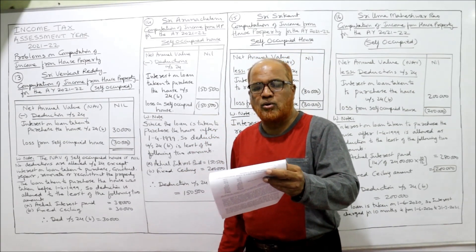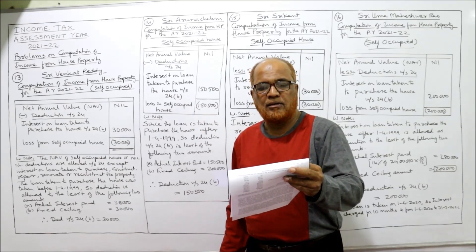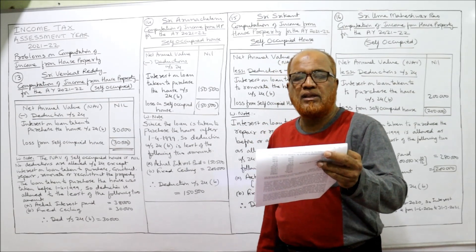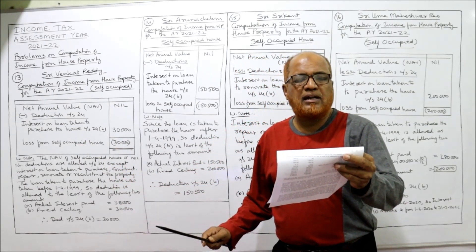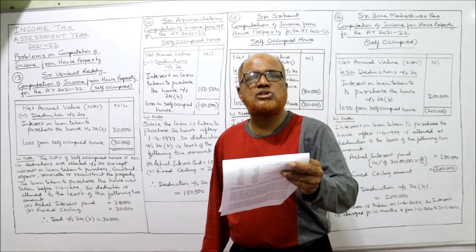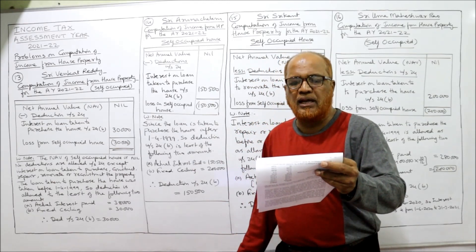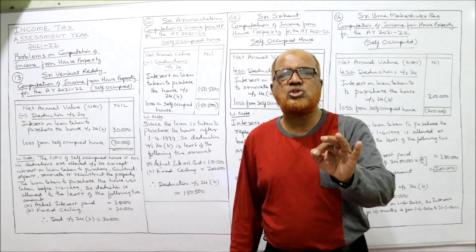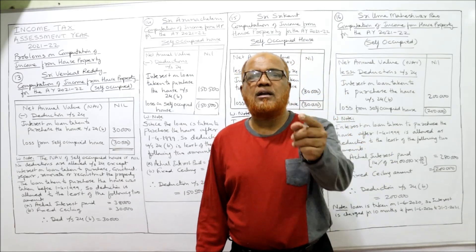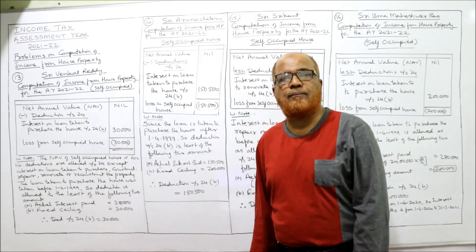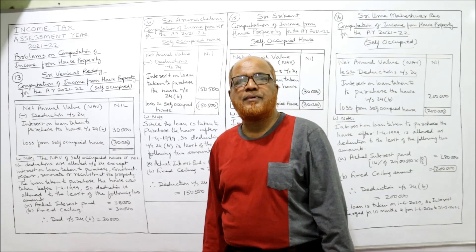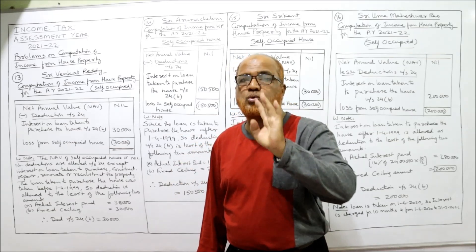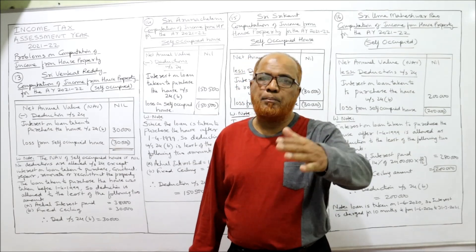Problem 14: Sri Arunachanam purchased a house in Pune on 1/7/2010 and is using it completely for his residential purpose — self-occupied. Fair rental value: ₹1 lakh (ignore). Municipal rental value: ₹80,000 (ignore). Municipal taxes paid (ignore). Land revenue (ignore). Interest on loan taken to purchase the house: ₹1,50,500. The different point here is the house was purchased after 1/4/1999 (it's 2010), so the ceiling amount is ₹2 lakh.